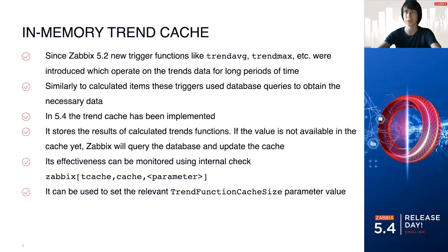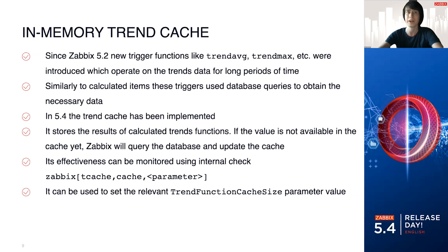Another very important thing comes down to database connection optimizations. Since Zabbix 5.2, there are new trigger functions like trend average, trend max, etc., introduced to operate on trends data for really long periods of time. Similarly to calculated items, these triggers use database queries to obtain the necessary data. In 5.4, we now have trend cache — it stores all results of calculated trend functions in memory. If a value is not yet in the cache, it will be queried from the database and stored in the cache. Their effectiveness can be monitored using internal checks, which you can rely on to set the relevant trend function cache size parameter value.